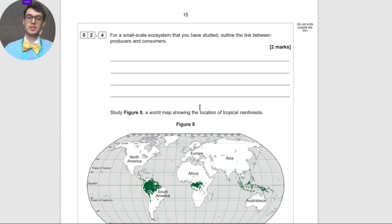For a small-scale ecosystem that you've studied, outline the link between producers and consumers. The producers basically transform the energy from the sun into energy that can be used, and sugars. So the producers provide the food and the nutrients for the consumers to carry further along the food chain. To convert sunlight into energy, and the consumers then can eat that.